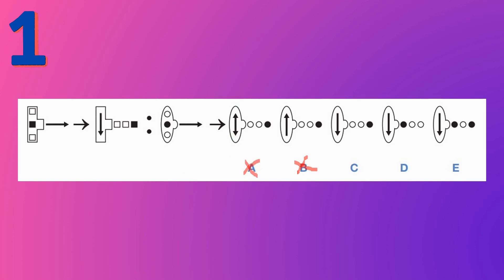We're left with C, D, and E. Now look at the first pattern — the squares inside are arranged sequentially: top, bottom, then middle. So in this pattern it should also be top, bottom, and middle — meaning two white circles and then a black circle. Only option C has two white circles followed by a black one, so D and E don't match the rule. C is the right answer.